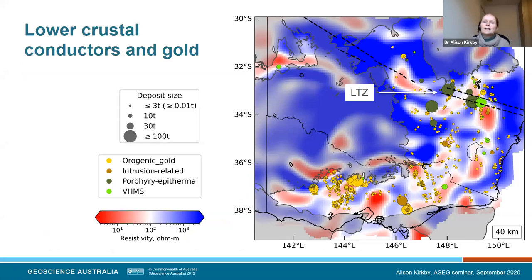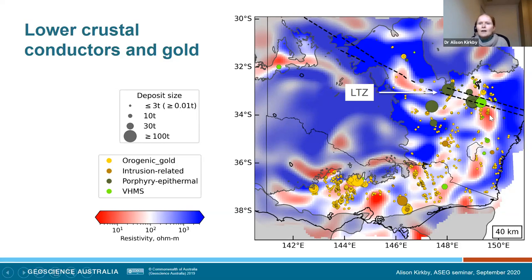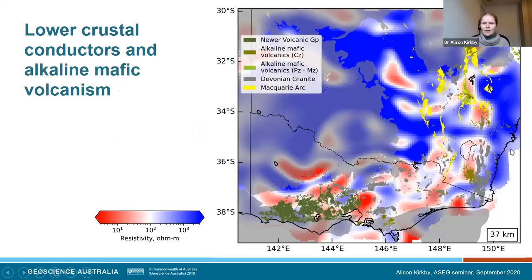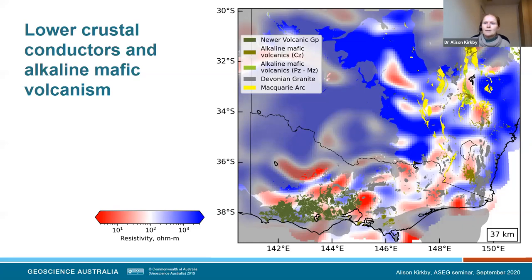Another thing we looked at was the correlation with mineral deposits — this is the subject of ongoing work. We noticed a correlation between conductors and mineral deposits. Shown here are gold deposits across New South Wales and Victoria. Particularly, some of the large copper porphyries align with some of these transverse structures identified in the MT model. Also, and probably related, there's a correlation between alkaline mafic volcanism and conductors in the lower crust. Are we mapping metasomatized lower crustal regions or conductive minerals deposited in the lower crust associated with these features?